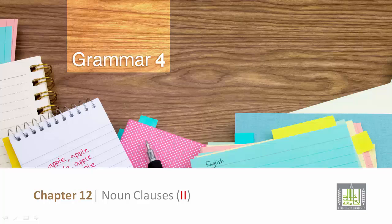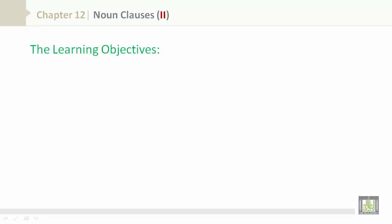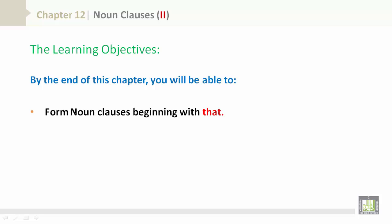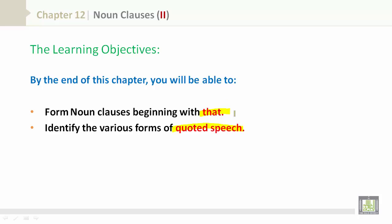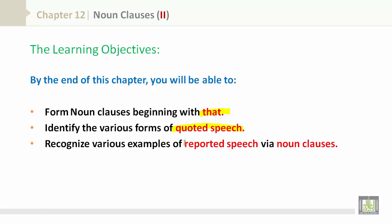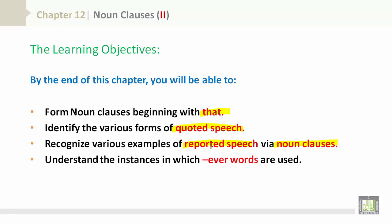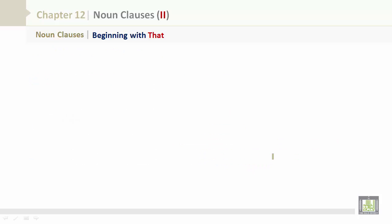Grammar 4, Chapter 12: Noun Clauses, Part 2. The learning objectives: by the end of this chapter, you will be able to form noun clauses beginning with 'that', identify the various forms of quoted speech, recognize various examples of reported speech via noun clauses, and understand the instances in which 'ever' words are used.